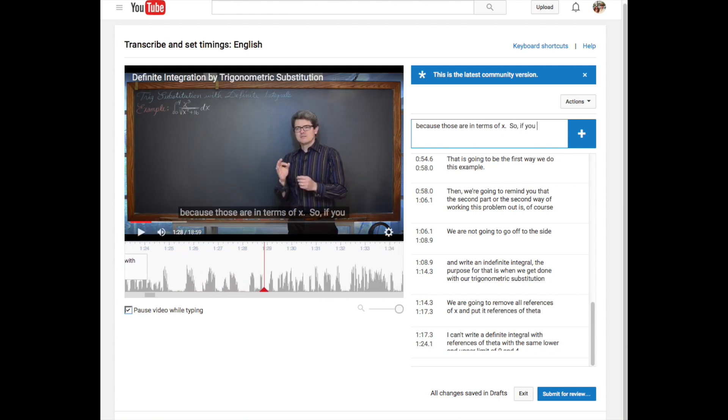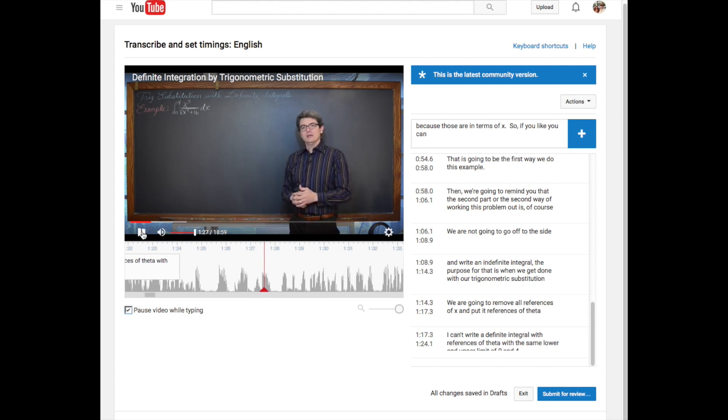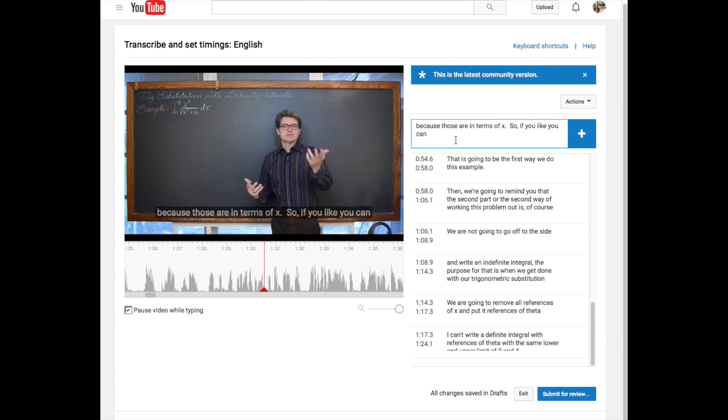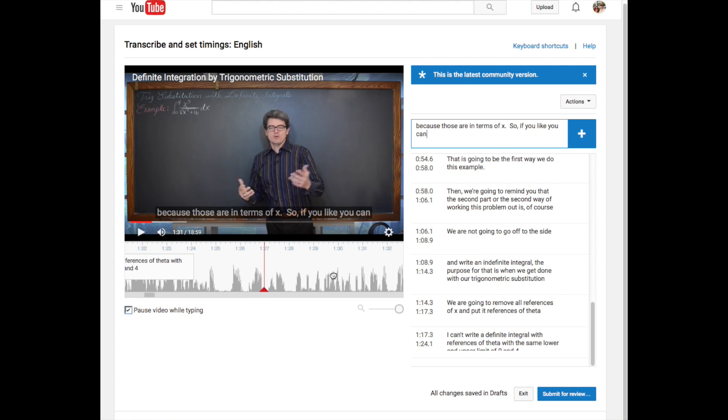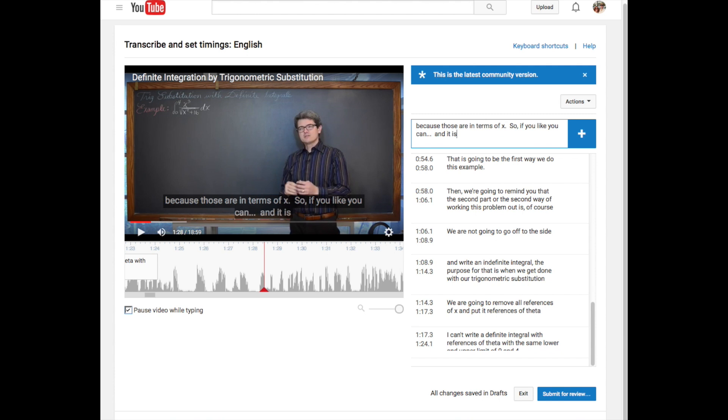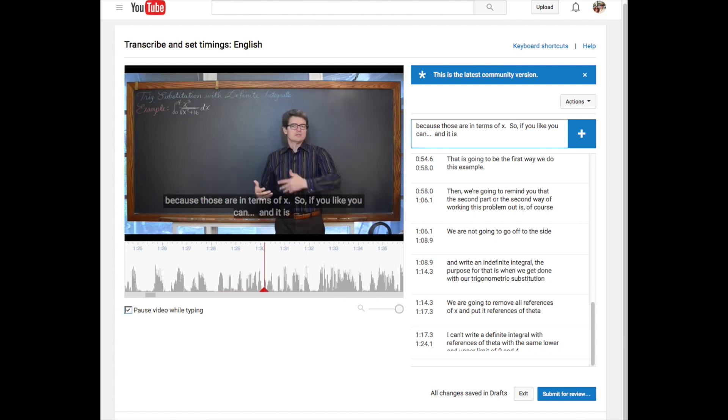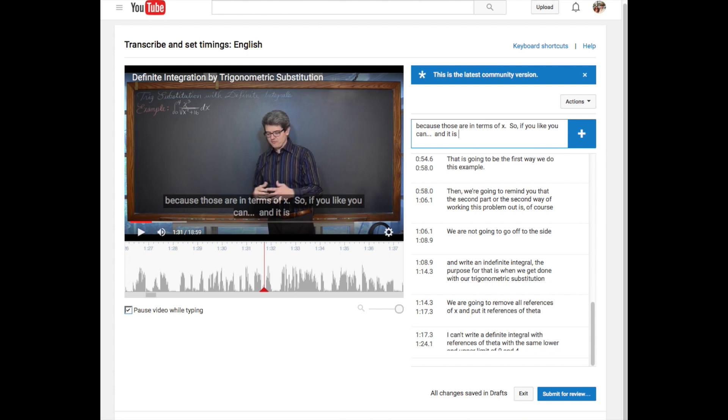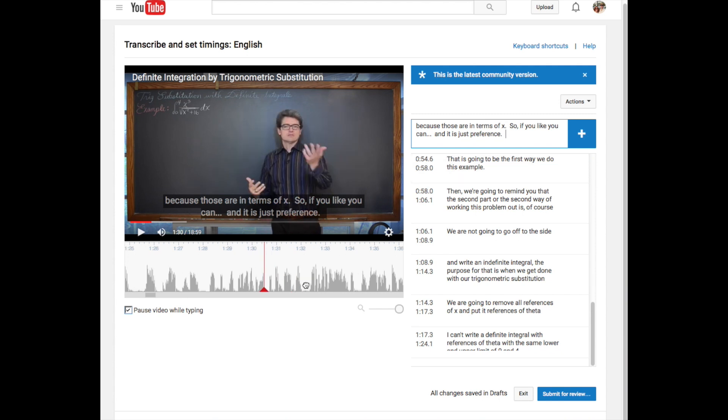Well I can't write a definite integral with references of theta with the same lower and upper limit of zero and four. So I have got about two complete lines of text. I can hit enter. And that just put that down at the bottom of the list of current closed captions. And that is pretty much it. You can click and drag this backwards and forwards. Hit play again. Zero and four because those are in terms of x. Now I am going to hit shift space to keep going. So if you like you can. And it is a. See I am not a great typist.